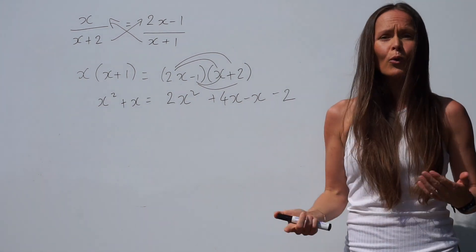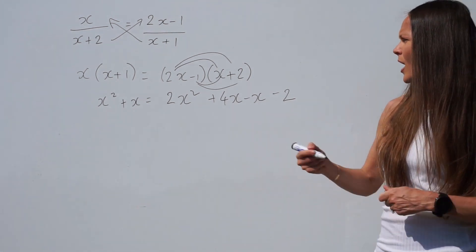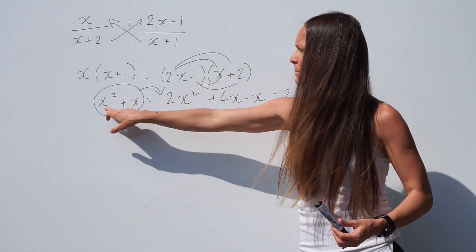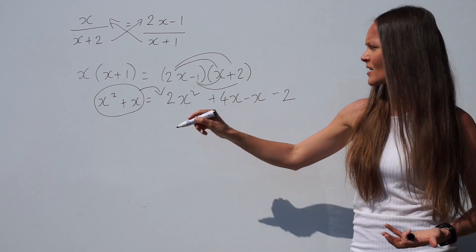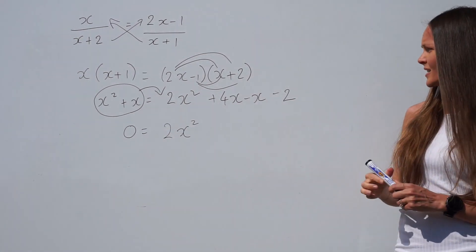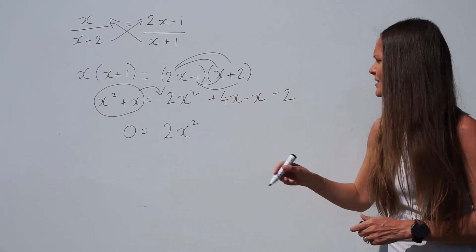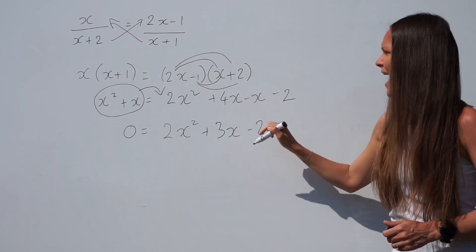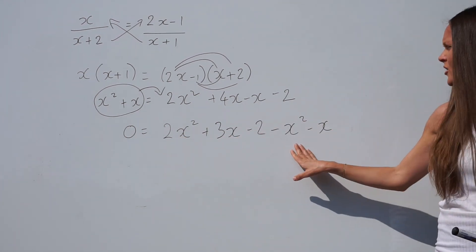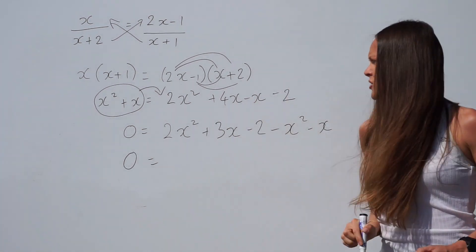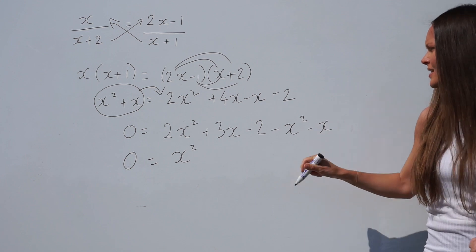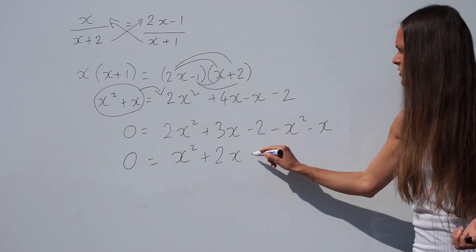2x multiplied by x is 2x squared, 2x times 2 is 4x, minus 1 times x is minus x, and minus 1 times 2 is minus 2. So I'm just expanding the double brackets here. Now what I should do next is put all of the terms on one side of the equation. I'm going to move these two terms over to the right hand side — when they move across the equal sign they change sign, so since they're both positive they're going to become negatives. On the left hand side there's nothing left so we've got 0. I can simplify: 4x take away x is 3x, the minus 2 is still there, and then we have negative x squared and negative x. So 2x squared take away 1x squared is x squared, and 3x minus x is 2x, with minus 2 remaining.